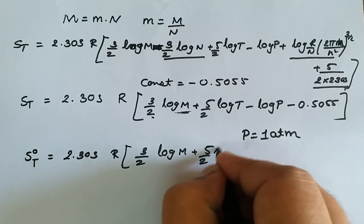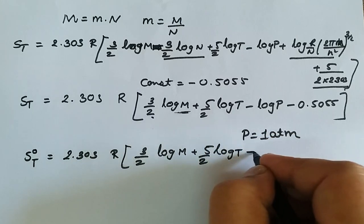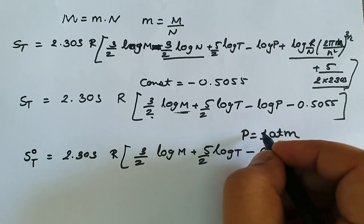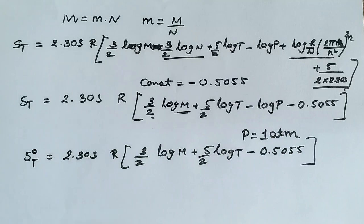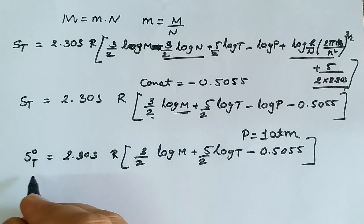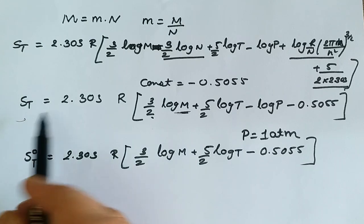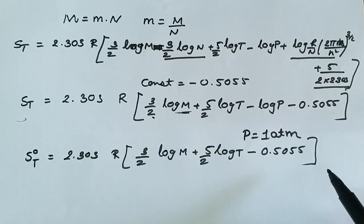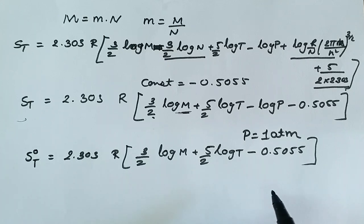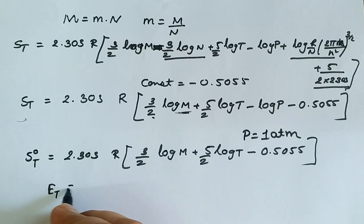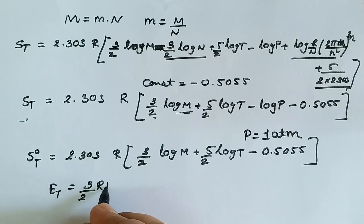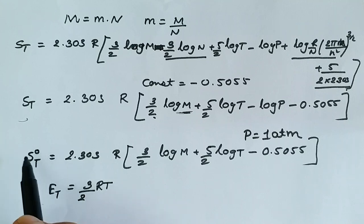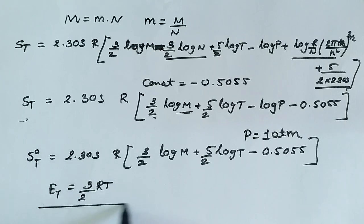At standard state, log P = log 1 = 0, so the standard entropy becomes: S°_T = 2.303R [(3/2) log M + (5/2) log T − 0.5055]. Both representations — for standard and non-standard states — are known as the Sackur-Tetrode equation. The translational internal energy is E_t = (3/2)RT, and the Sackur-Tetrode equation gives the translational entropy.